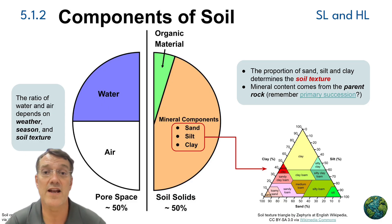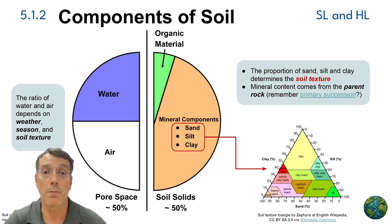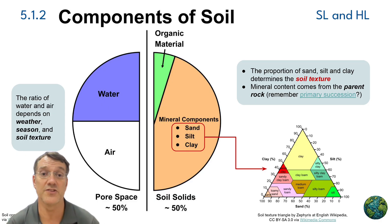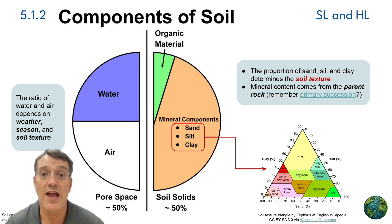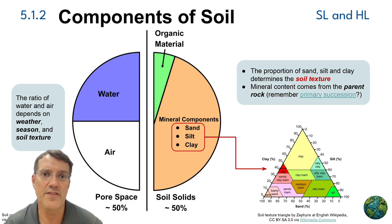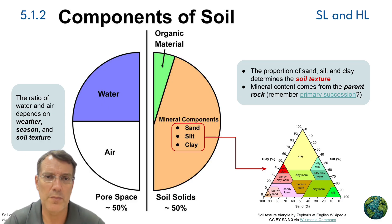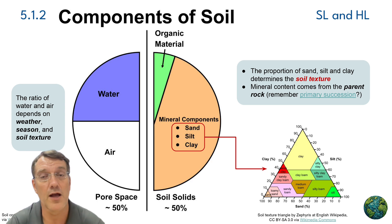The inorganic components in soils — sand, silt, and clay — come from the parent rock material through weathering. The proportion of these particles determines the soil's texture, which we can identify using a soil texture triangle. Water and air fill the spaces between particles, and the ratio changes based on weather conditions, seasons, and the soil's texture. Remember how this connects to primary succession, where weathering of parent rock begins the soil formation process.